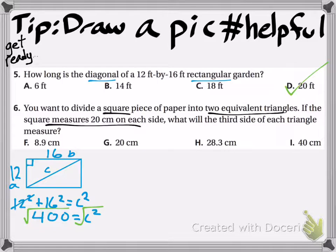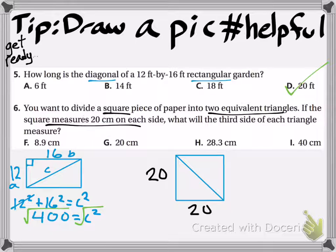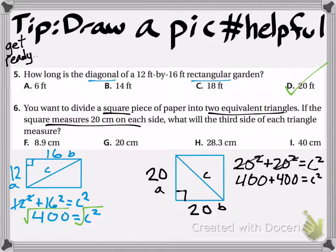Number six, a square is being divided into two equivalent triangles. So that would be, again, dropping a diagonal from corner to corner. It says the square is 20 by 20. So you can see the 20s right here. So that means, again, side c, opposite the right angle, is what we're looking for. So your 20s go into the Pythagorean theorem like that. You get 400s. Add them together, 800. Take the square root. It's about 28.3.